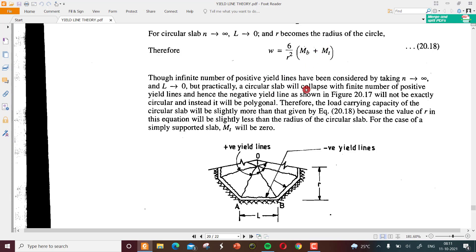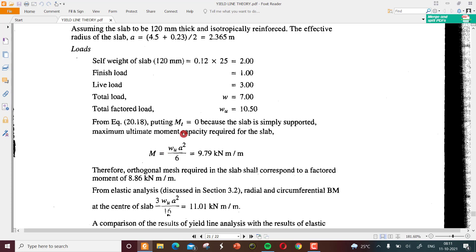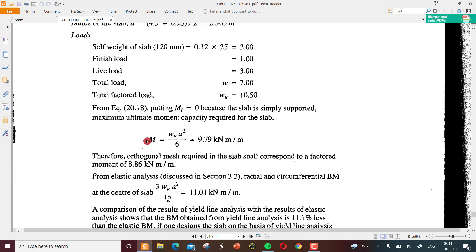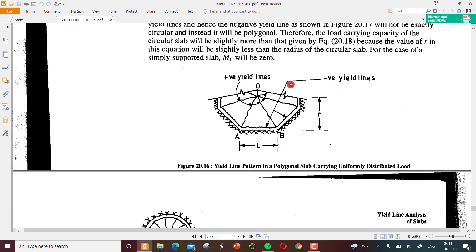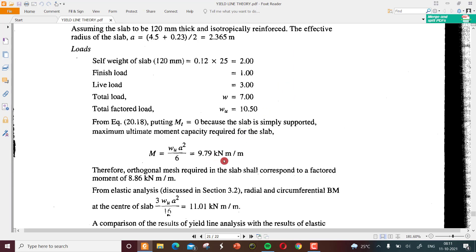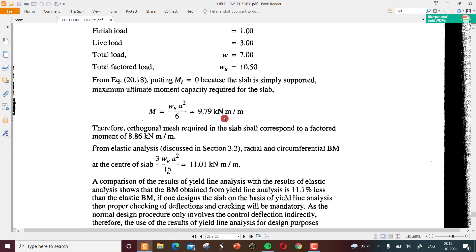Then directly applying the equation from equation 20.18. Put M_t equal to 0 because slab is simply supported, so there won't be any torsion moment acting. M equals w times r squared by 6. This is obtained as 9.79 kN-meter per meter.